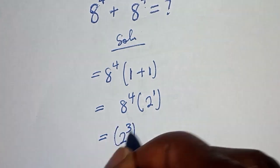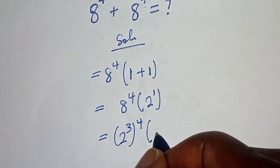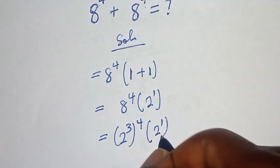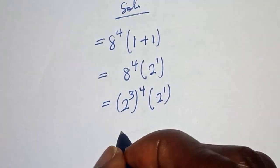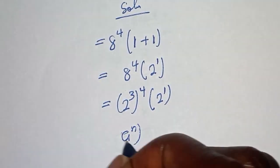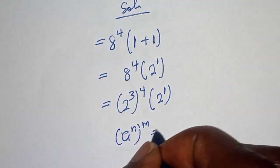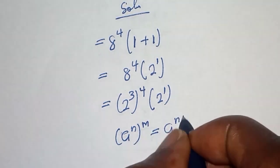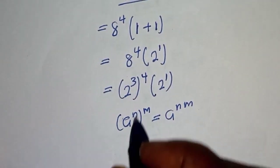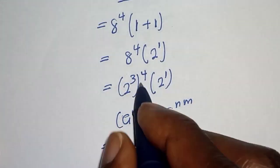This is (2^3)^4 times (2^1). Take note of this rule: (a^n)^m = a^(n×m). Then this becomes 2 raised to power (3 times 4).